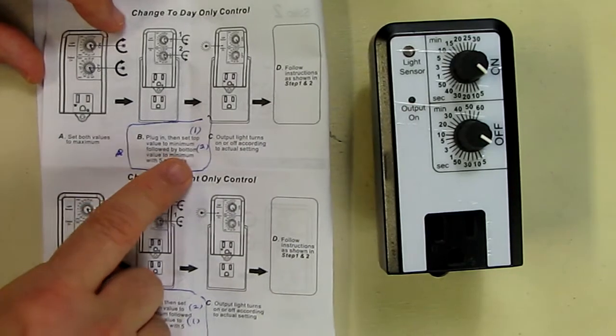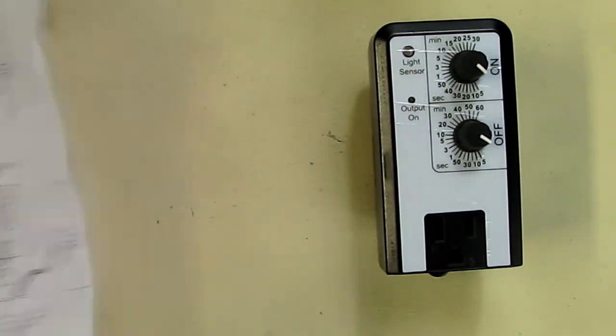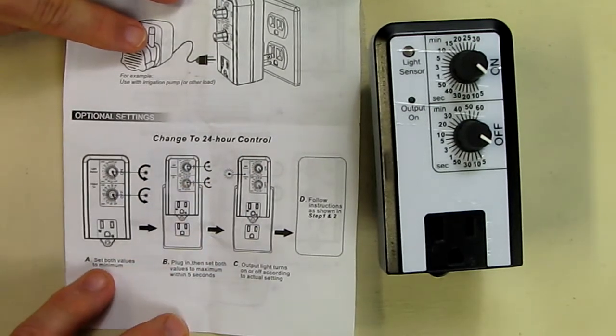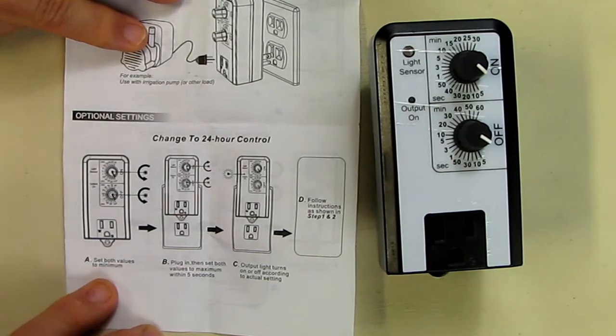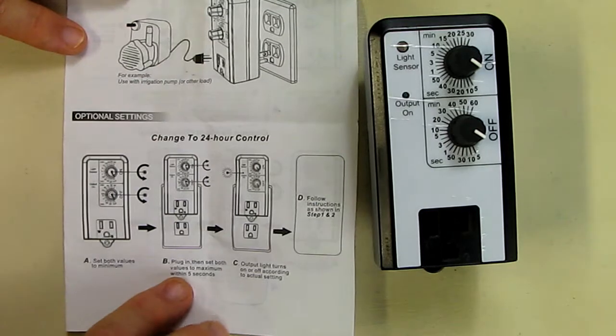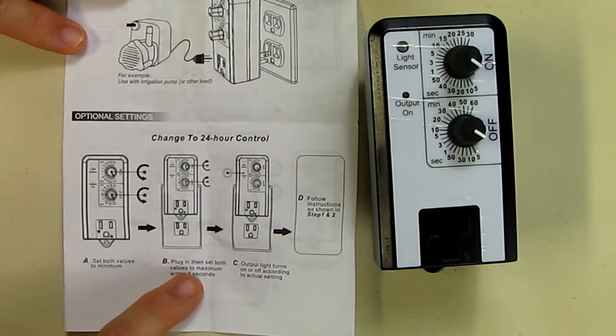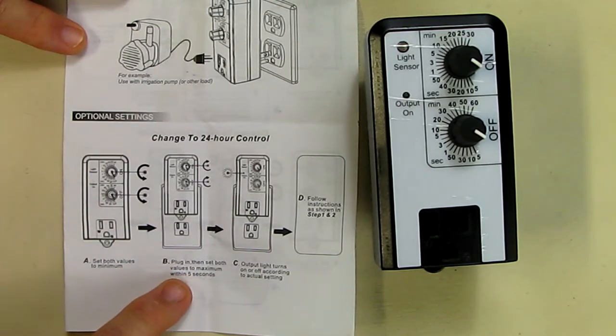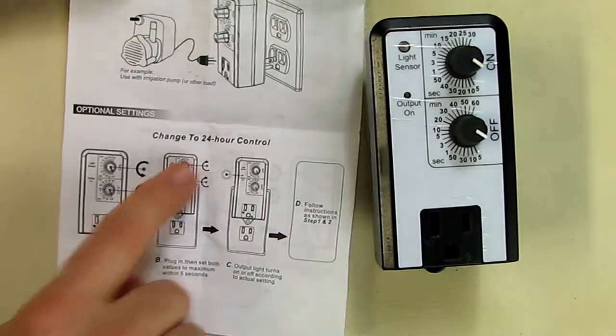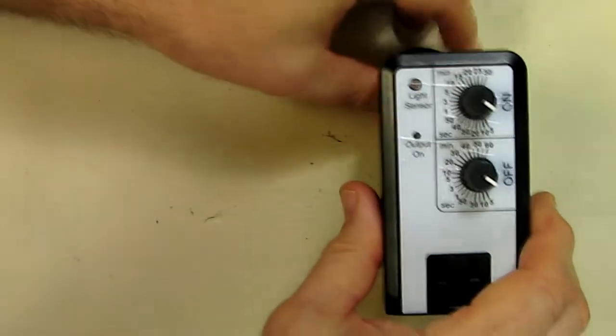Now at first I thought these were the same but they're not. It tells you how to specifically do it. So the first thing I'm going to show you is how to make it 24-hour control. When you plug this thing in, first thing you do is set both values to minimum, counterclockwise set to minimum, then you plug in the device, then you set both values to maximum within five seconds and that's how you get it to be 24-hour mode. So let's give that a try.